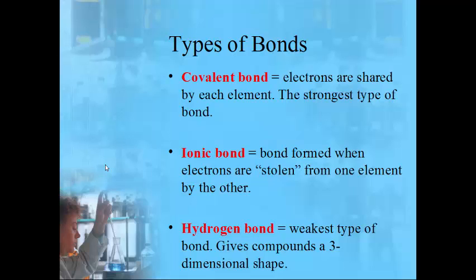Compounds are held together by one to three different types of bonds, which vary in strength and in the shape they give the compound. The strongest type is the covalent bond, where electrons are shared equally between elements. The next is the ionic bond, formed when one element steals electrons from another, creating an ion — an element with a charge. The weakest is the hydrogen bond, which helps give a compound a three-dimensional shape.